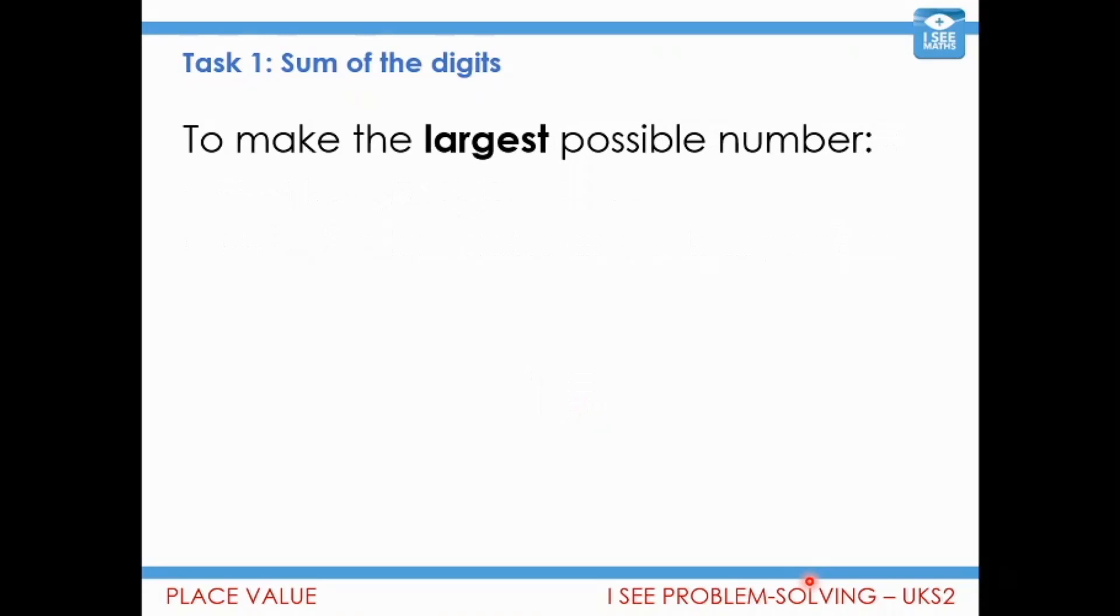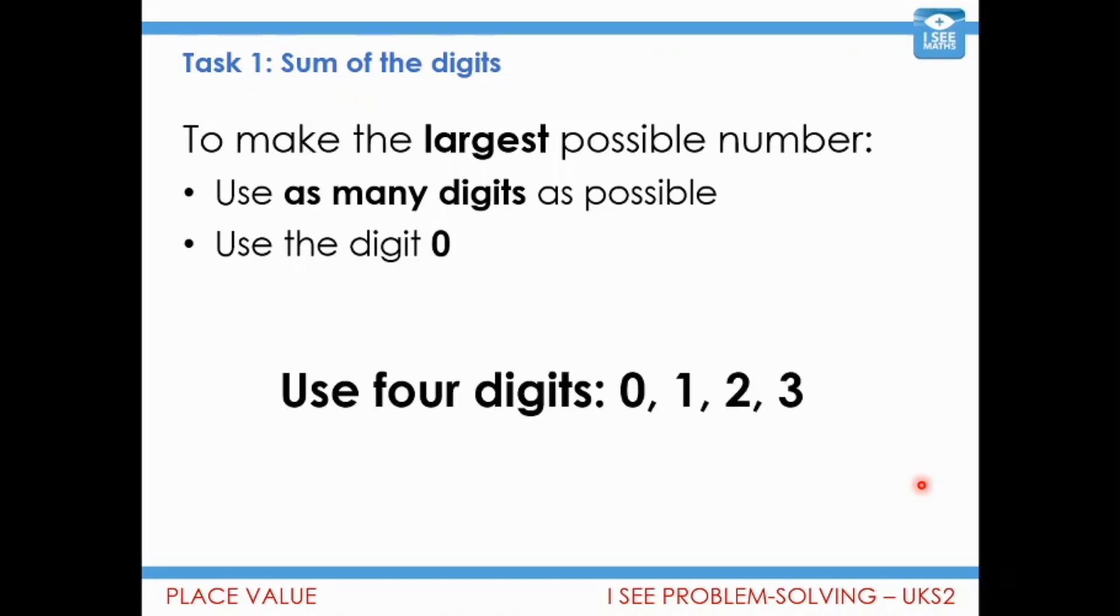Now, to make the largest possible number, use as many digits as possible. That's the key. So rather than using larger digits, I want to be able to use more digits, because that's what makes my number larger. And remember, you can use the digit 0. But we can't repeat a 0, because we could only have 1. So the digits that I would use would be 0, 1, 2, and 3. Because the sum of those digits is 6. Then I just need to think about the order. I'd want to go largest to smallest when I'm arranging those digits, left to right, so I get the number as big as it can possibly be, 3,210.